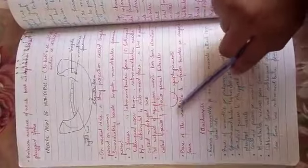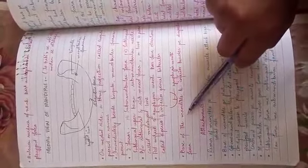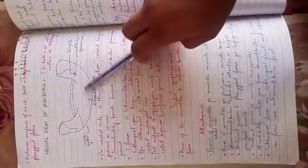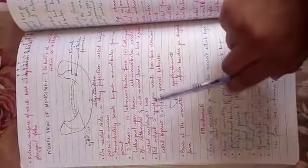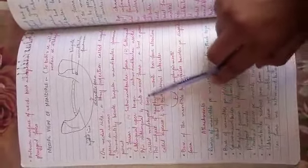We will see the base of the mandible in the inferior border. At the base of the mandible in the inferior border is a digastric fossa.